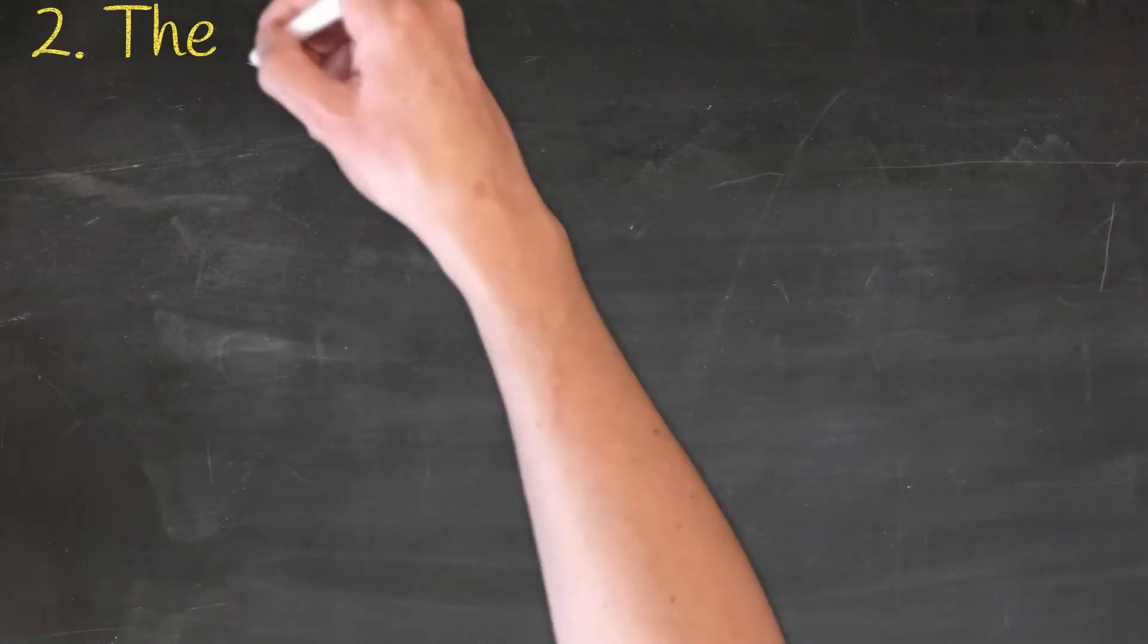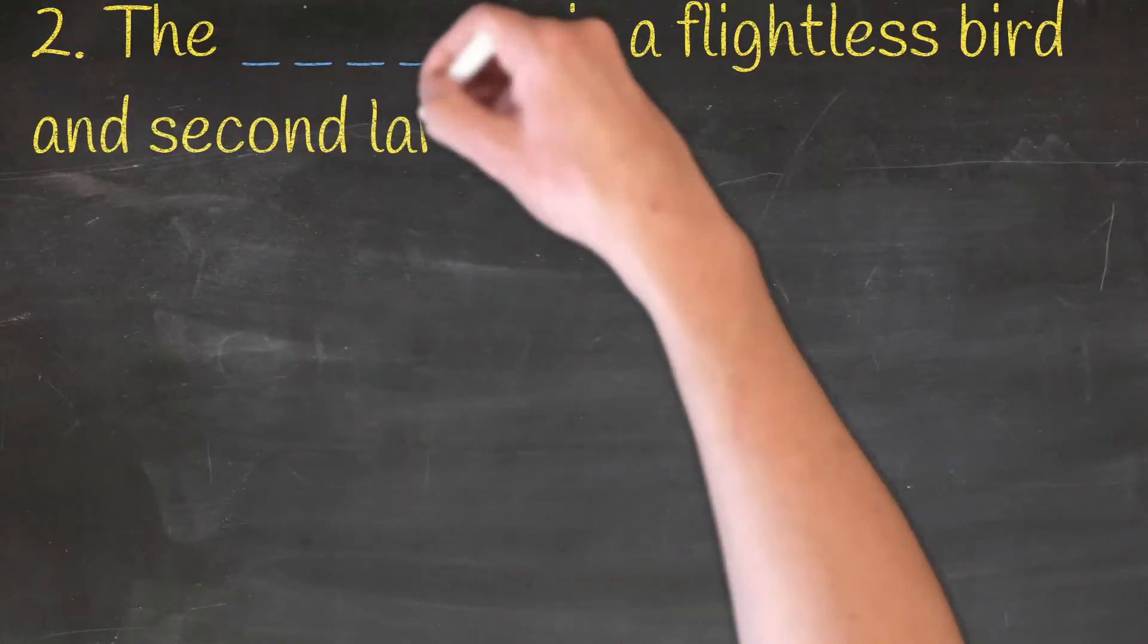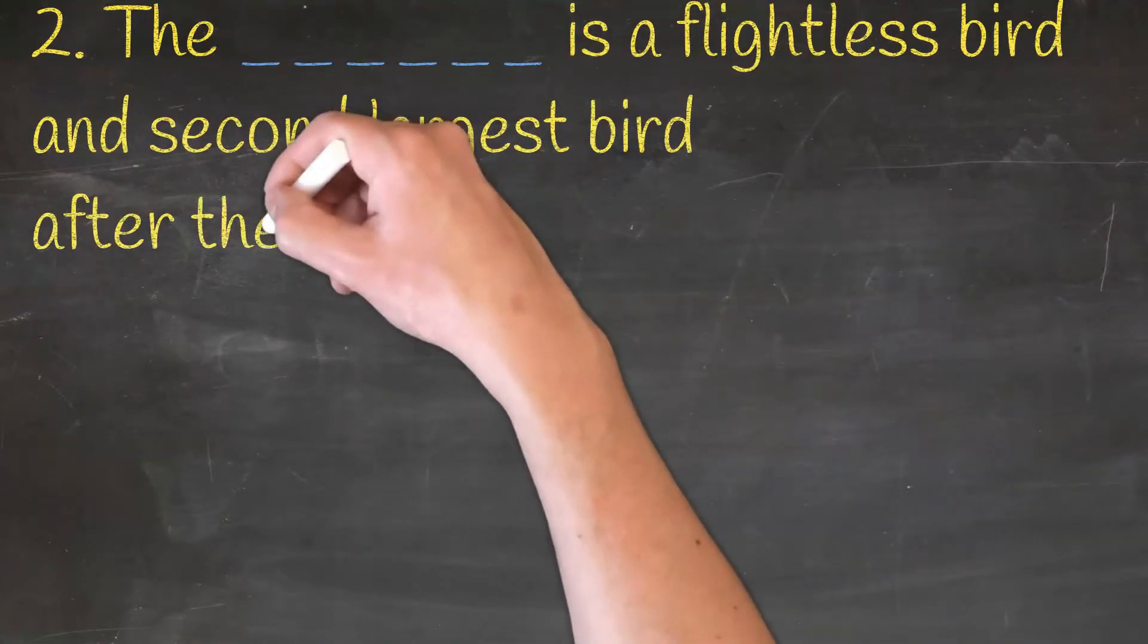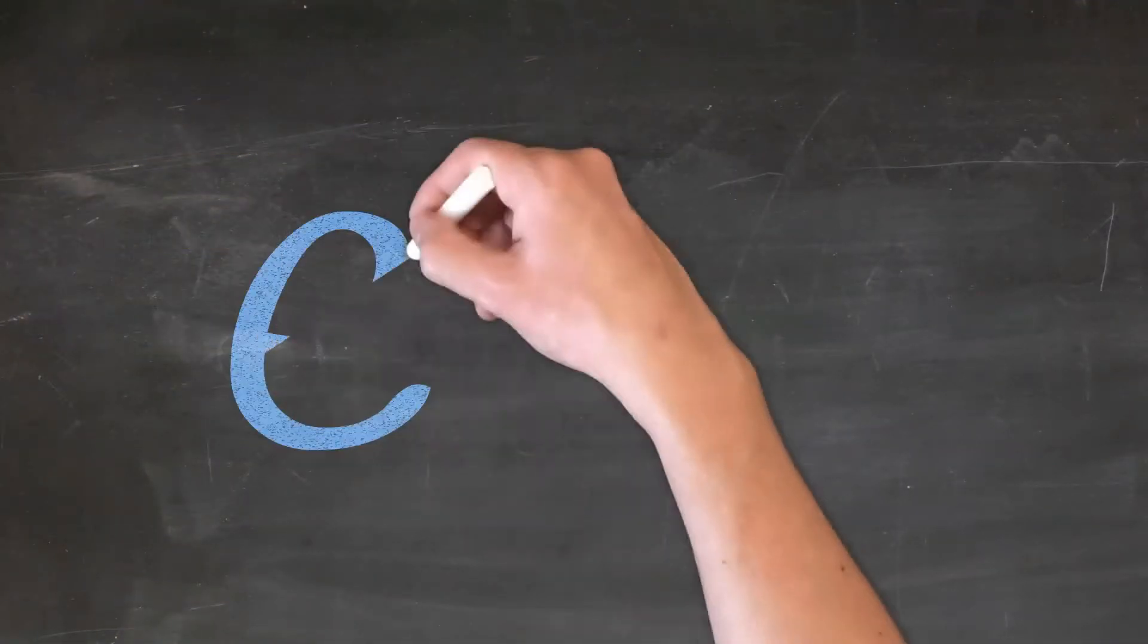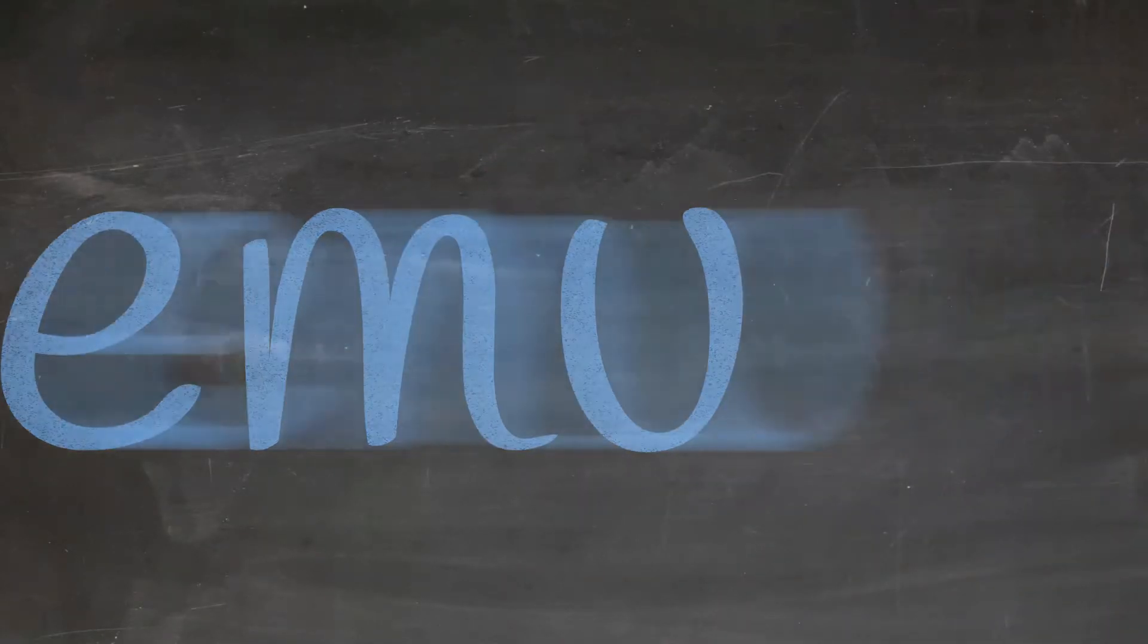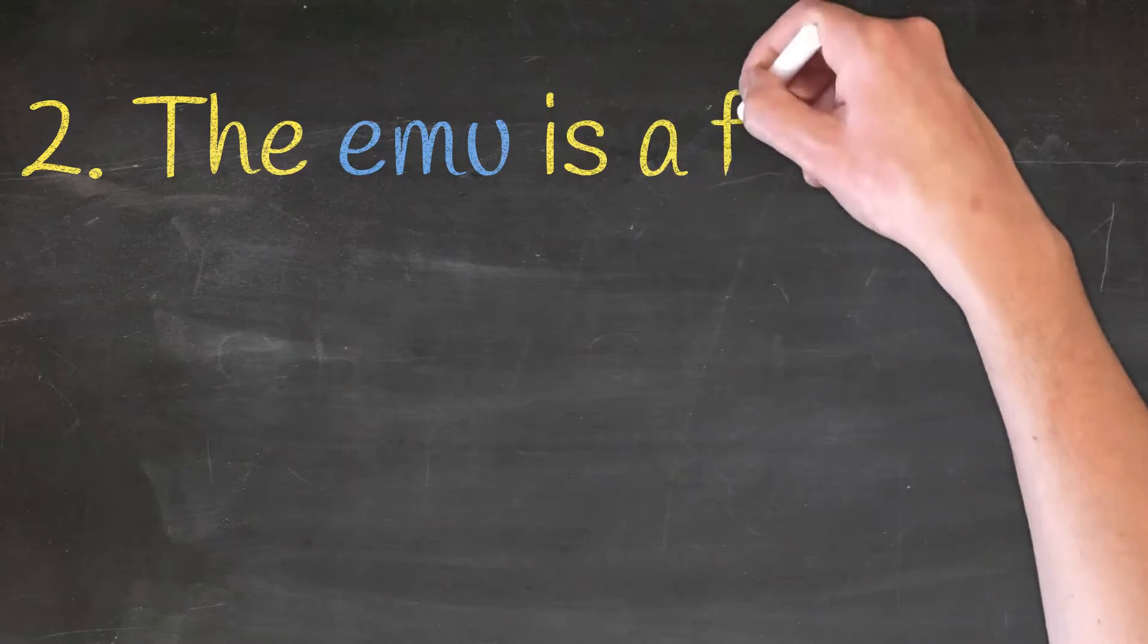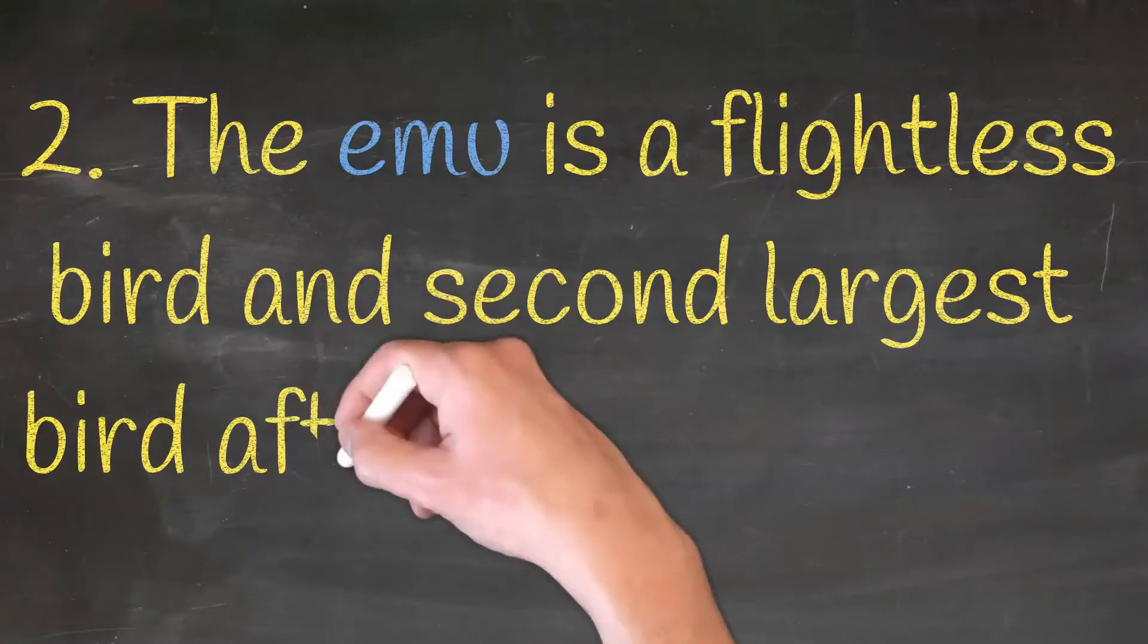The dash is a flightless bird and second largest bird after the ostrich, owl, dodo, ibis or emu. And the correct answer is emu. The emu is a flightless bird and second largest bird after the ostrich.